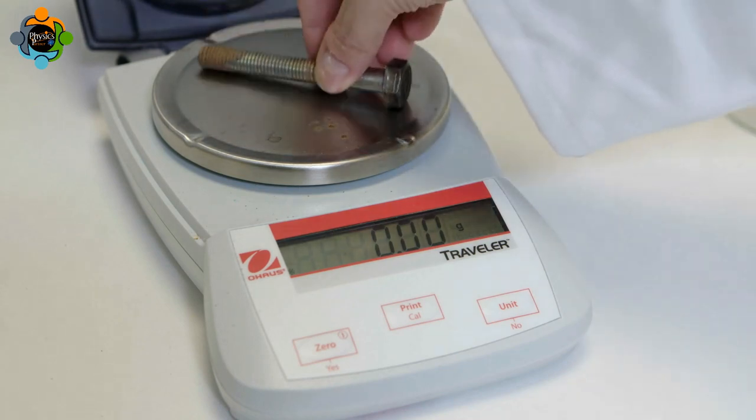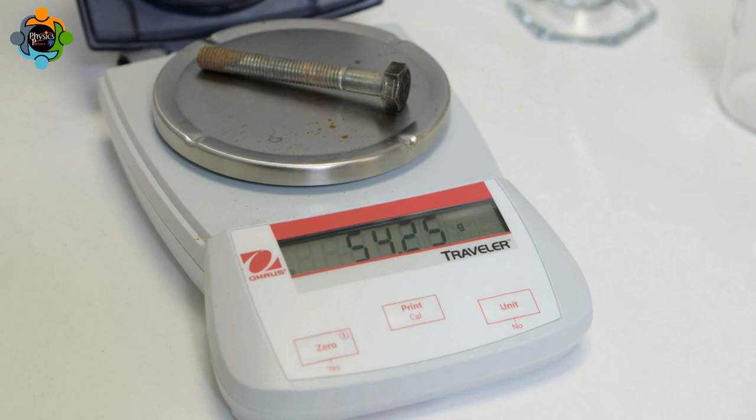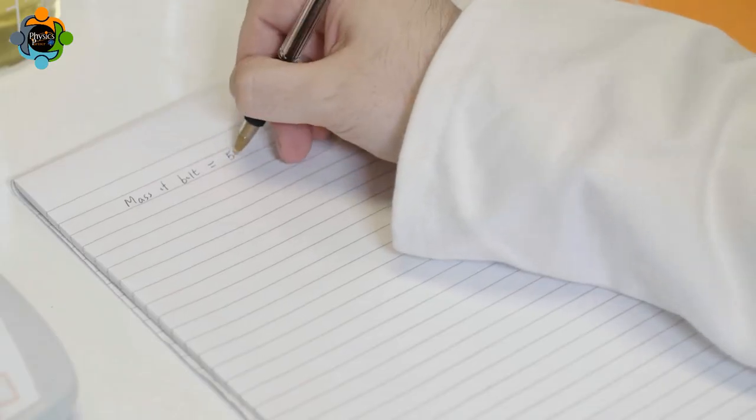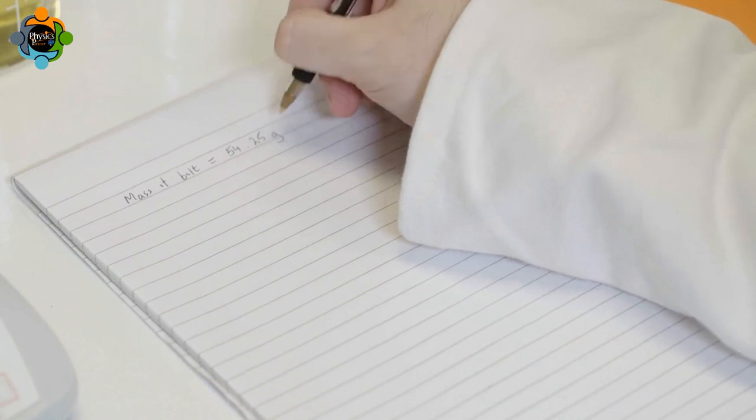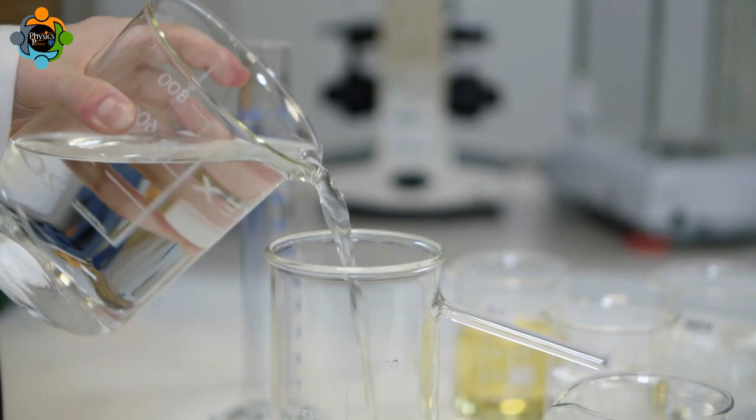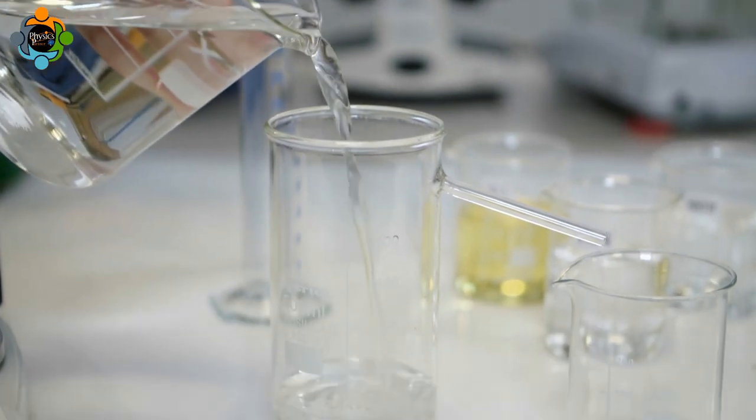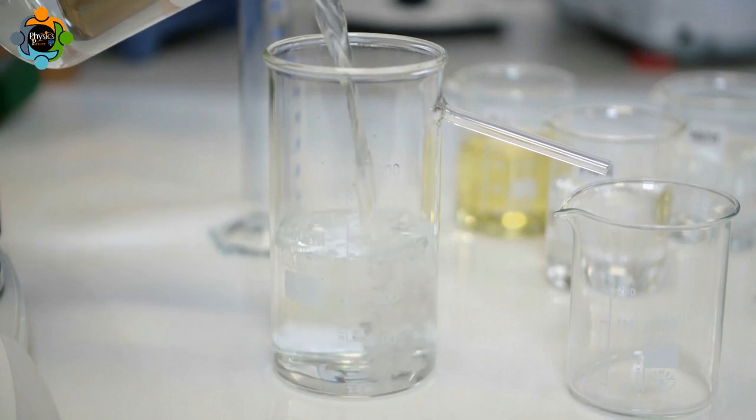The bolt is placed on the balance and its mass is recorded. Next, the displacement beaker is filled to the spout with water. An empty beaker should be placed underneath the spout.